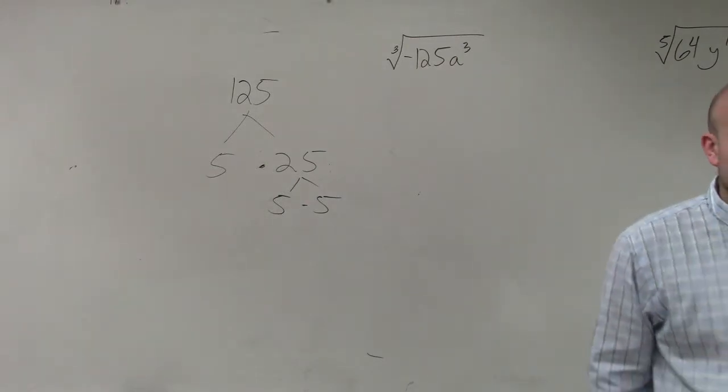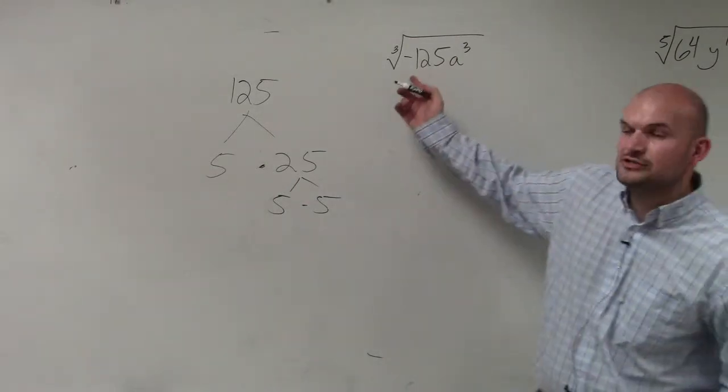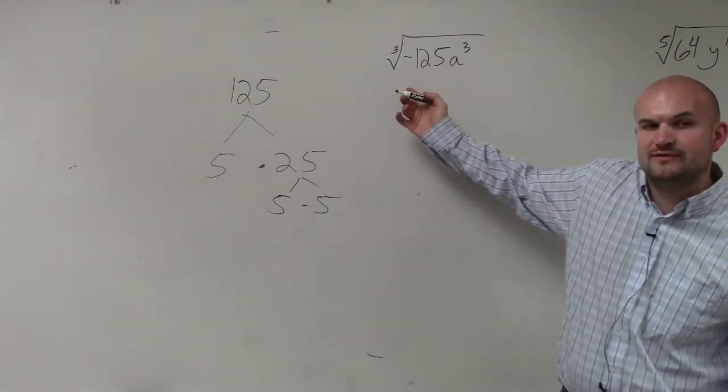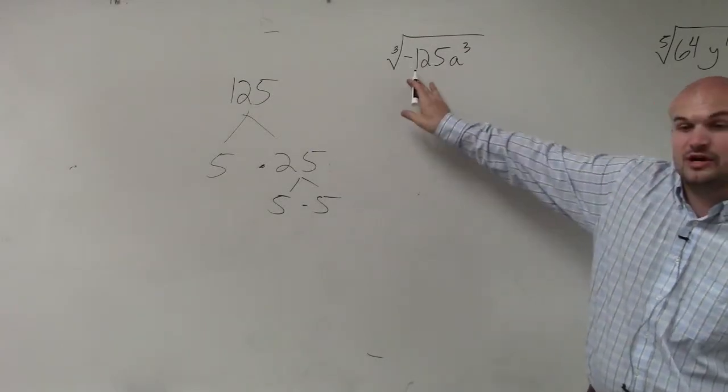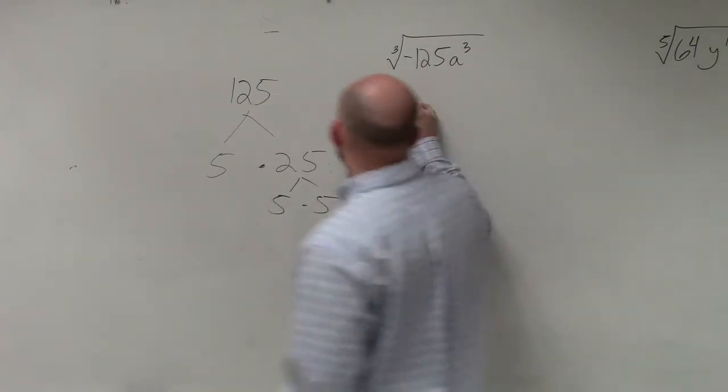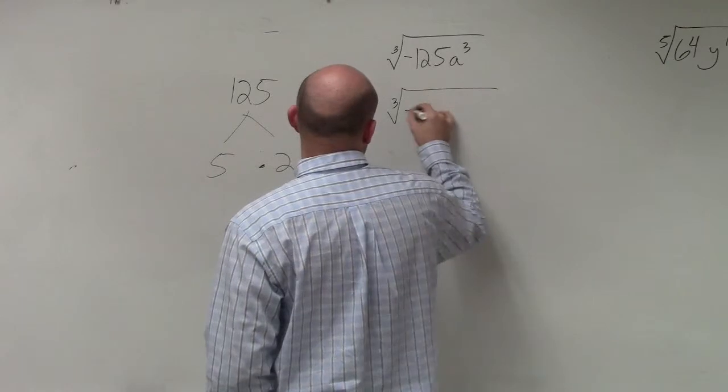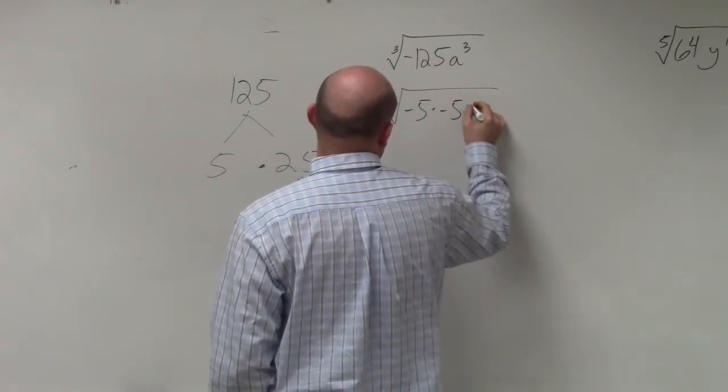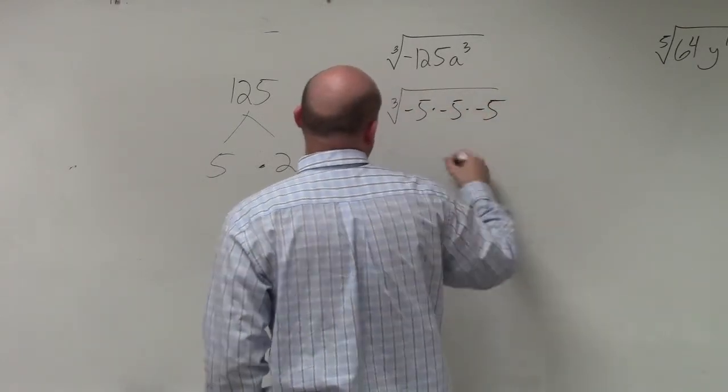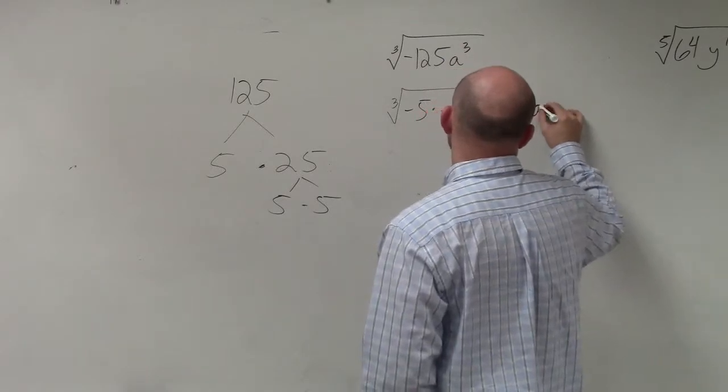So what we see is that although, ladies and gentlemen, we're not trying to figure out negative 125, we're trying to figure out the cube root of negative 125. So therefore, I can rewrite this as negative 5 times negative 5 times negative 5. And then the a is a times a times a.